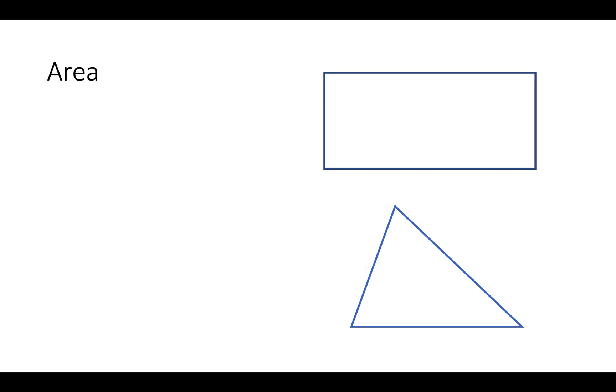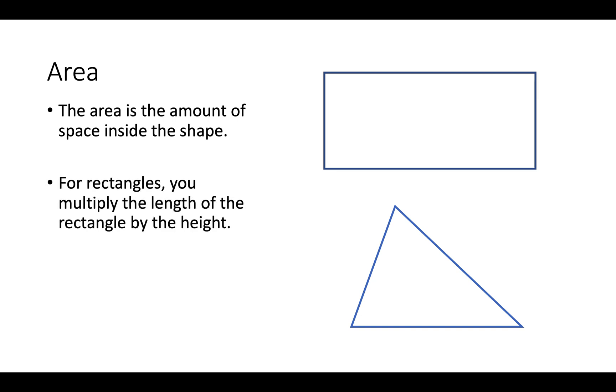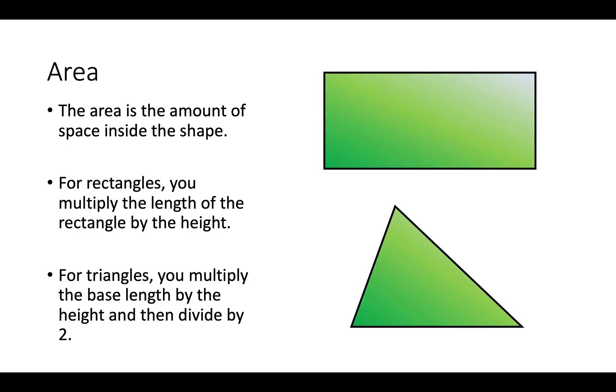The area is the amount of space inside the shape. For rectangles you multiply the length of the base by the height of the rectangle. And for triangles you multiply the base length times the height and then divide by 2. The formulas look like this.